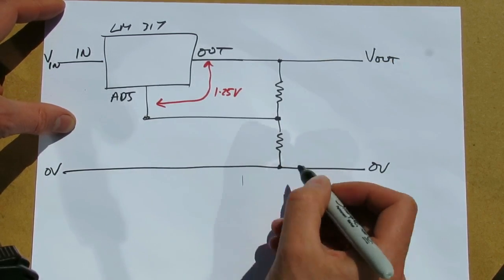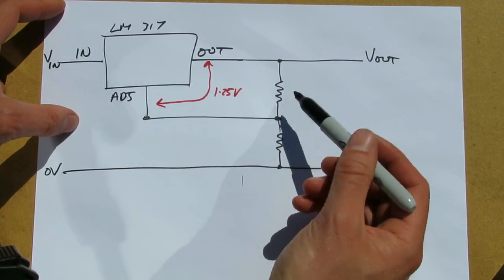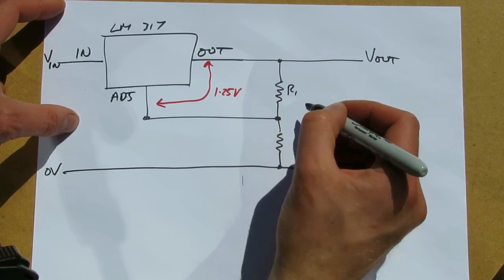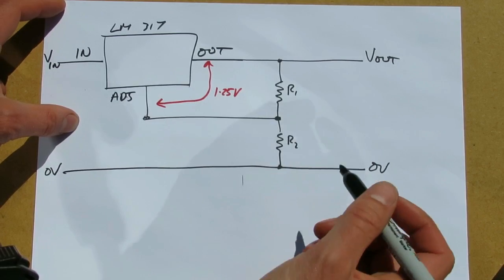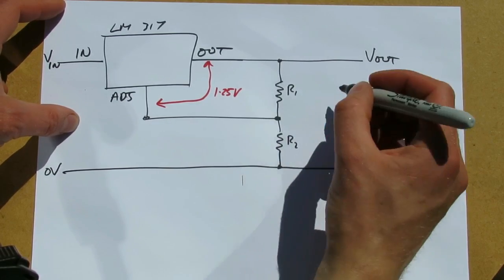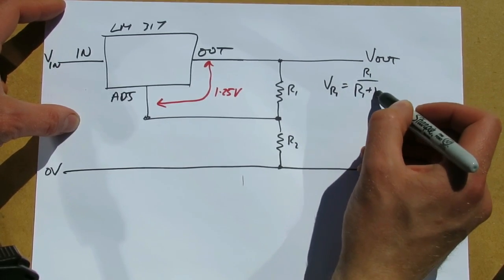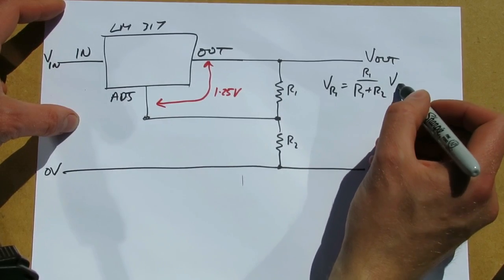We connect the adjustment terminal to a resistive divider between Vout and 0 volts. If that's R1 and R2, the voltage across R1 will be R1 over R1 plus R2 times Vout.